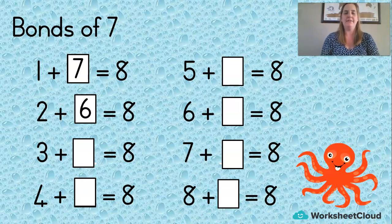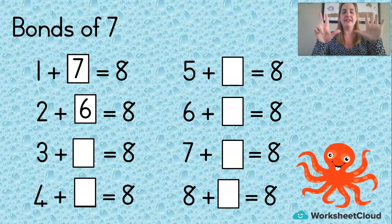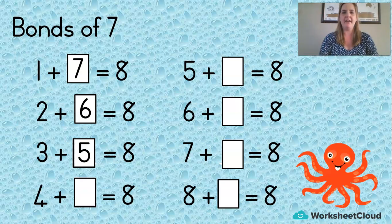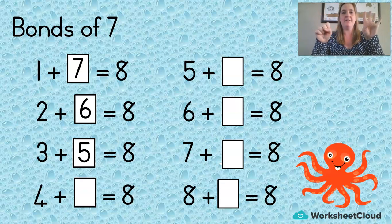Let's do it again. I've got eight. Three went across. How many have I got left? Five. I've got eight and four went across. How many have I got left? Four. Brilliant.